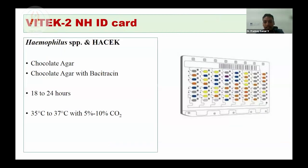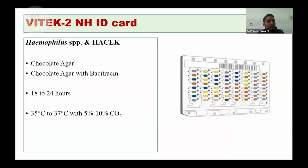The Vitek-2 NH ID card is commonly available and can identify all Haemophilus species and HACEK group mentioned. Growth should be taken from chocolate agar or chocolate agar with bacitracin, preferably incubated for 18 to 24 hours at 37 degrees Celsius and 5 to 10 percent CO2.